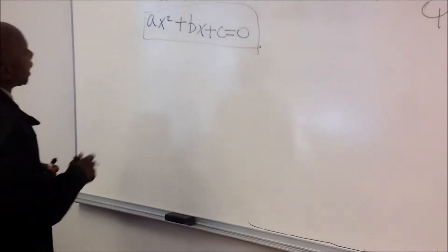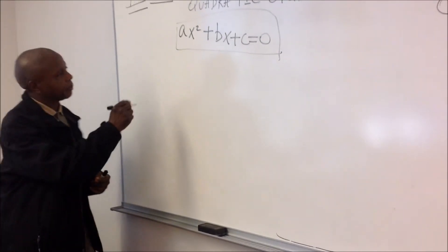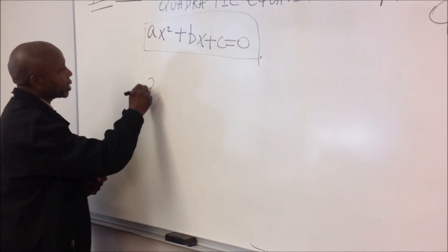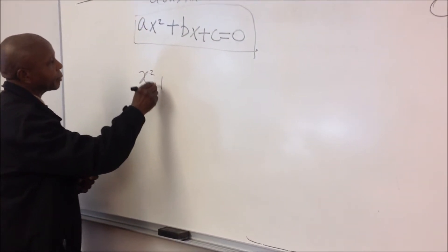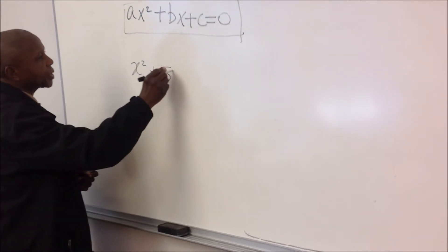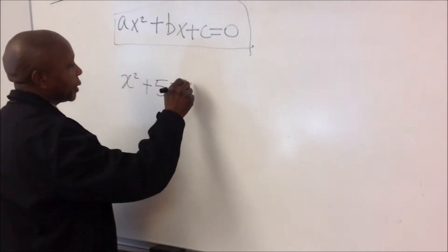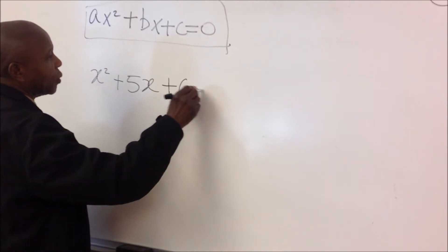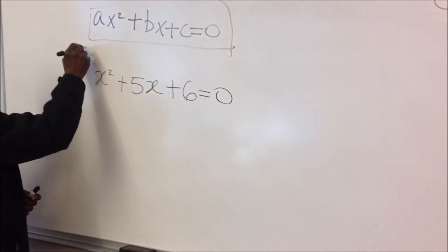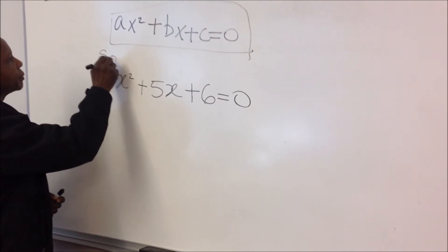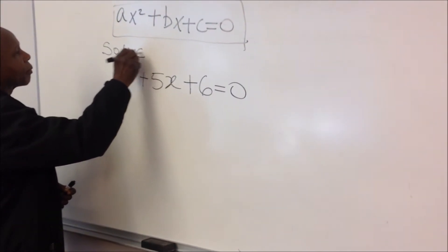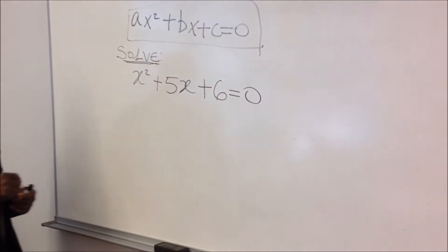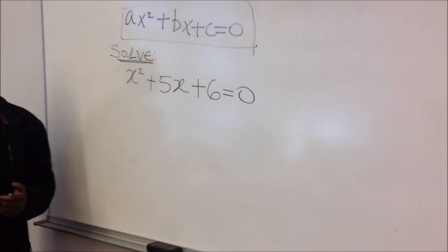Let's take an equation of this form. Suppose you have x squared plus 5x plus 6 equal to 0, and you're given the operational word: solve. How do you solve a problem like this?